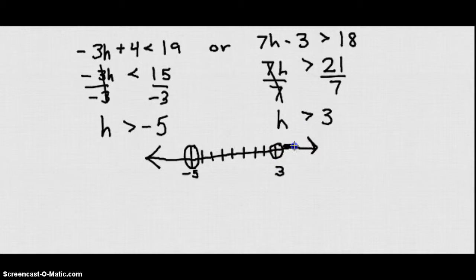So we are just going to go ahead and graph h is greater than 3. H also could be greater than negative 5, so that actually covers 3 along with it.